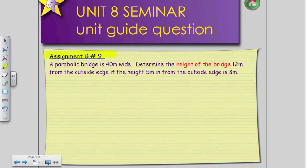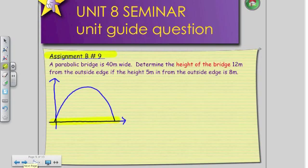First of all, we're going to actually draw the problem out. Another engineering type problem. The highlighted portion is going to refer to the base of the parabolic bridge is 40 meters wide. So if I'm taking this bridge that I want to create and I want to transpose it onto a graph, that means I'm going to use 0,0 to represent one end of the bridge. And the other end of the bridge, because it's 40 meters wide, this is going to be 40,0.